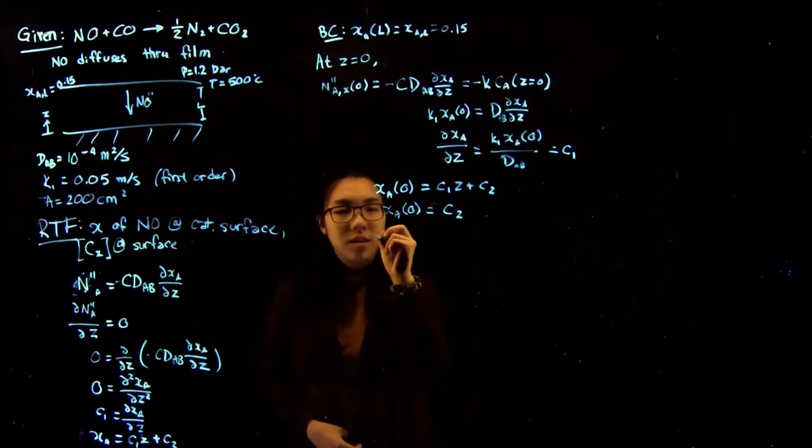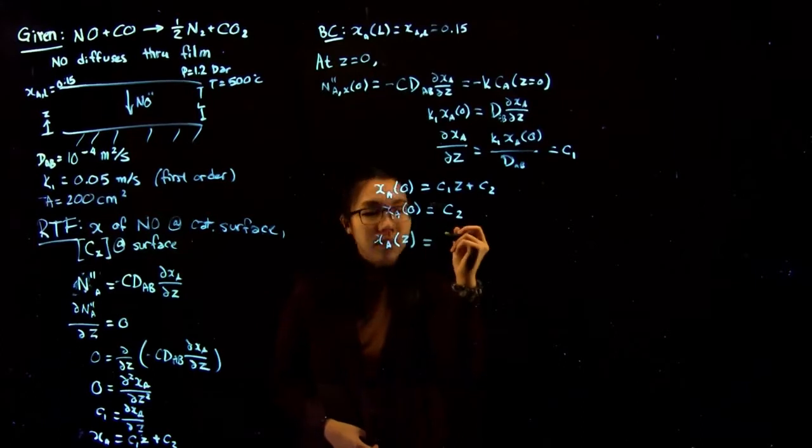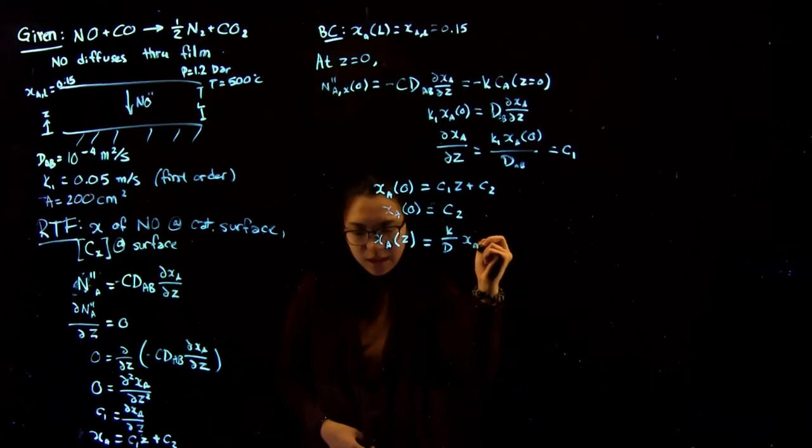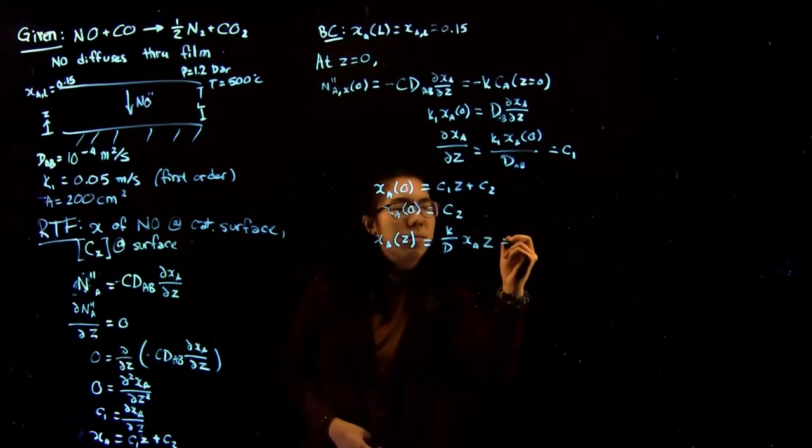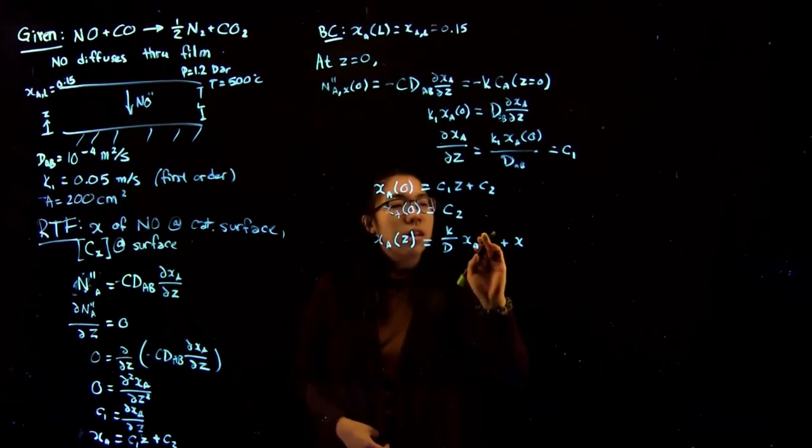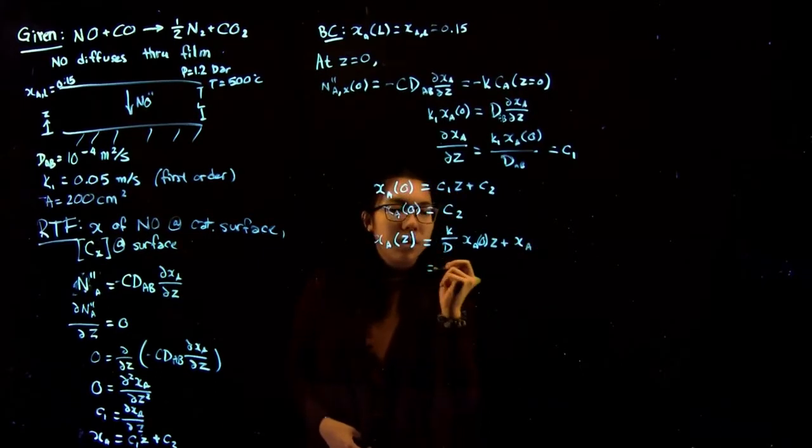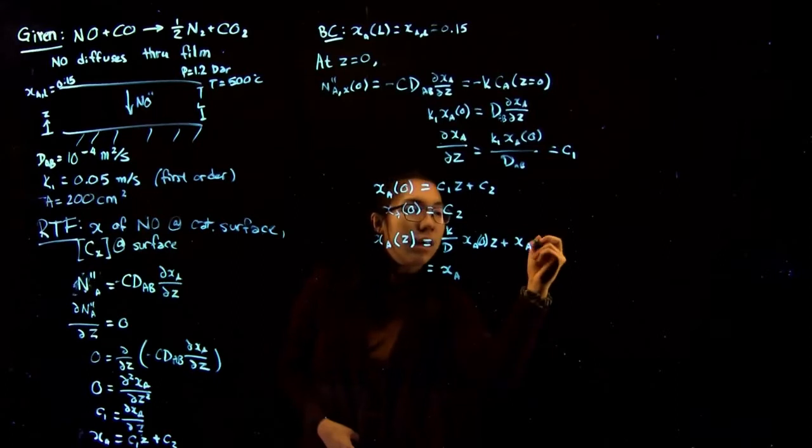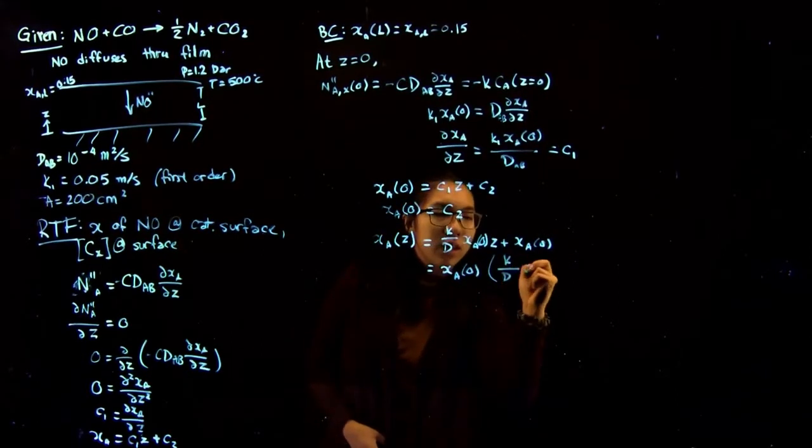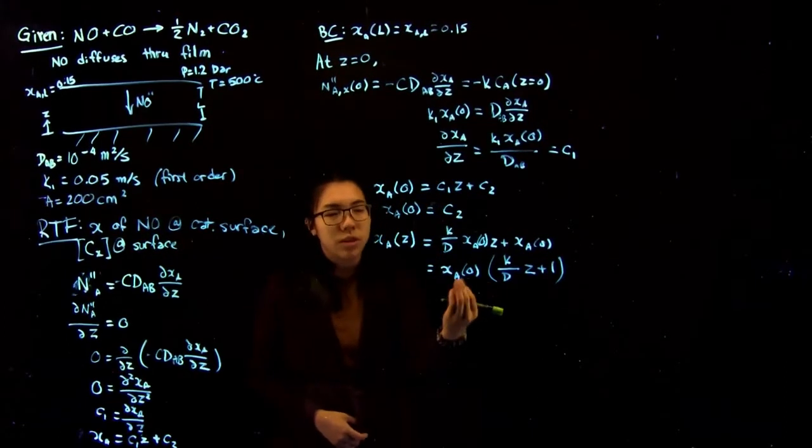Next, what we can do is write the general equation. XA at Z is equal to K over D XA times Z plus XA at zero times Z plus XA, which means that we can factor out XA at zero. And this gives us K over D Z plus one. So we still haven't solved this completely because we don't know this value.